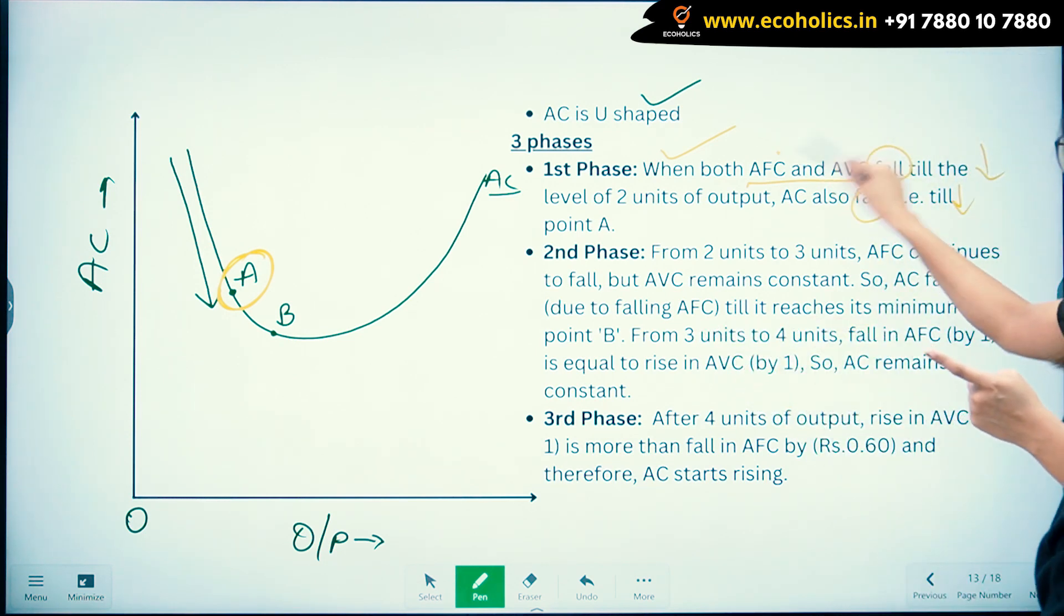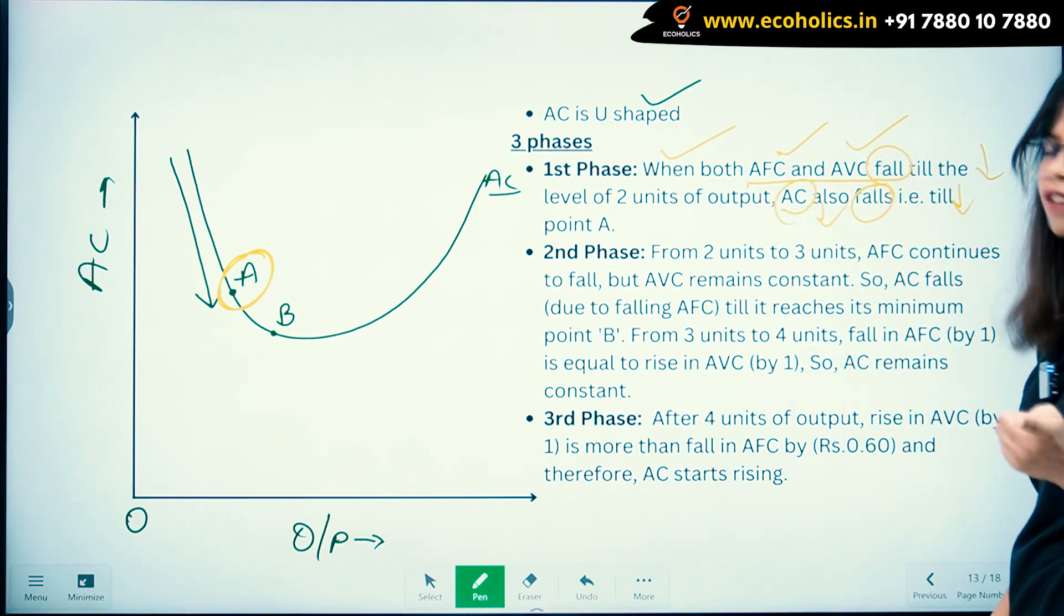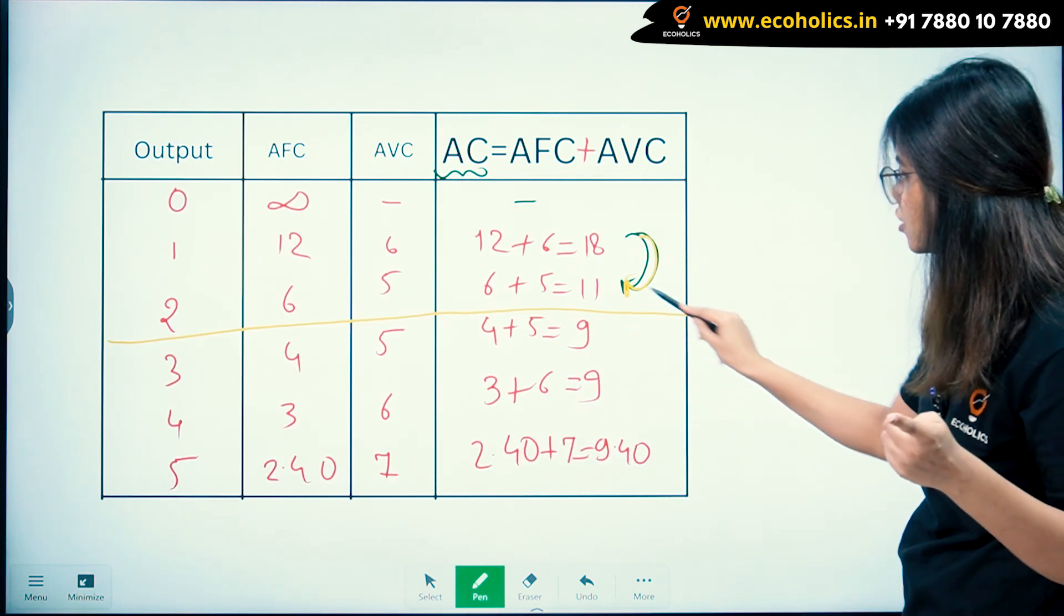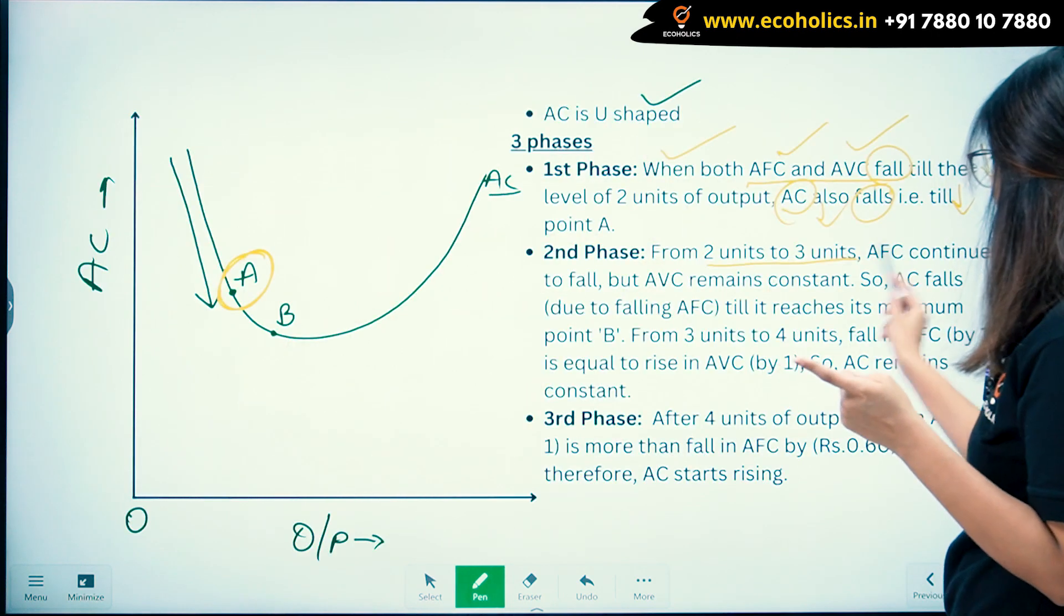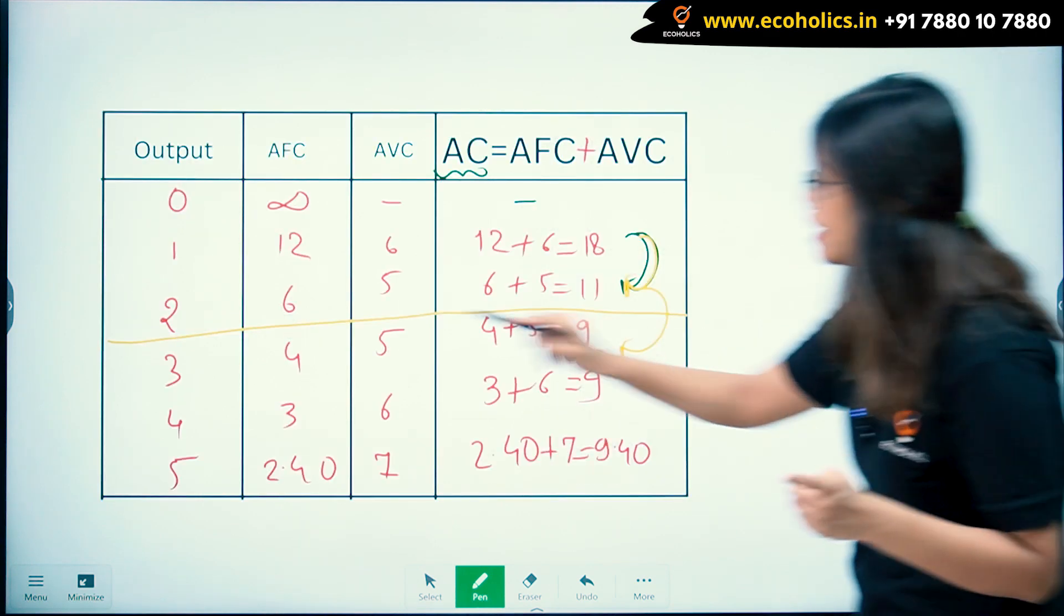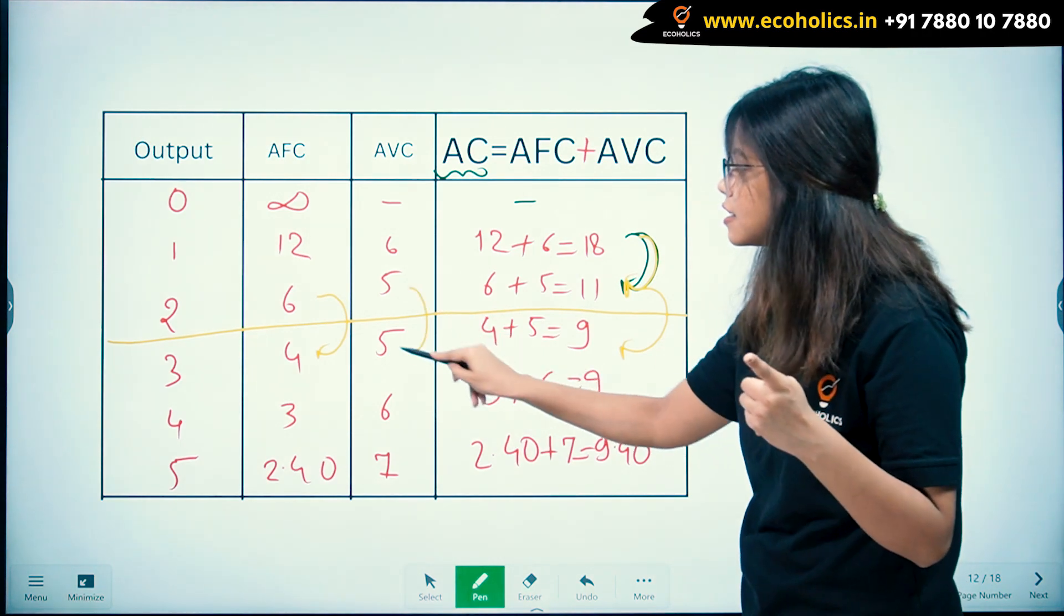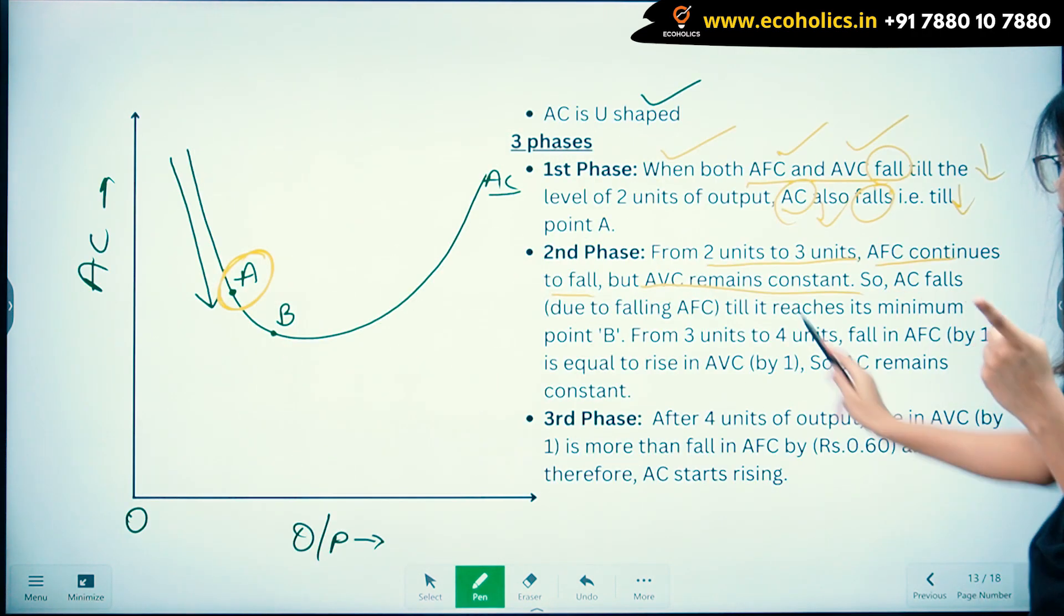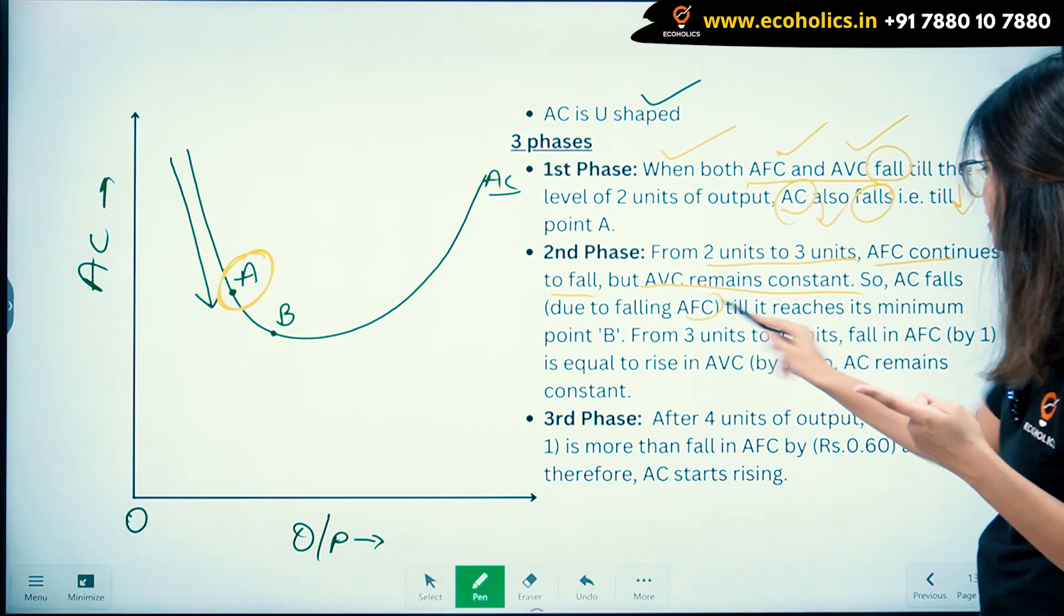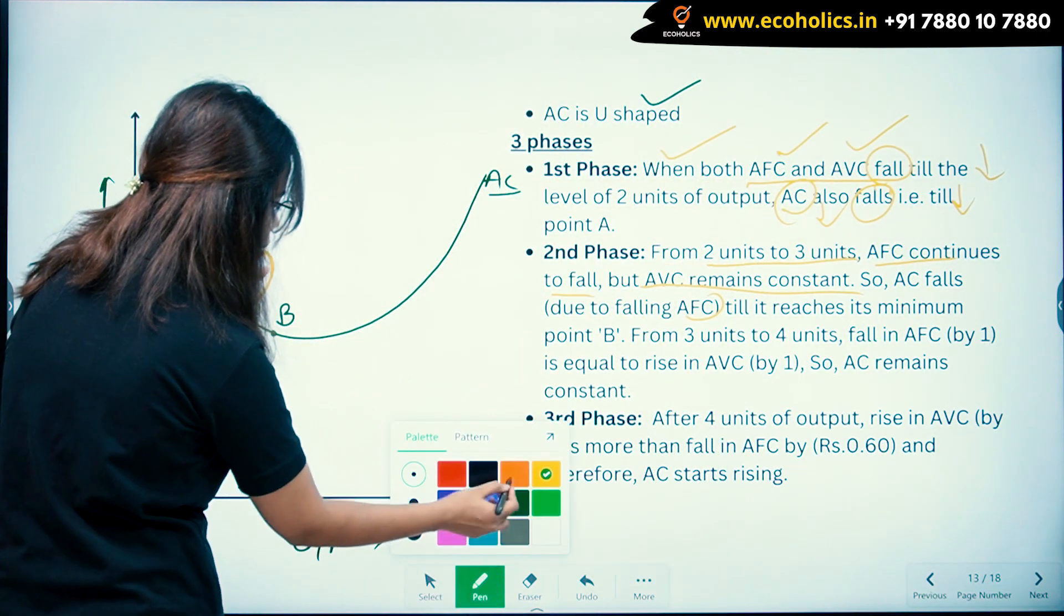Second phase is from two to three units. AFC continues to fall but AVC remains constant. AFC continues to fall from 6 to 5, but AVC is constant - 5 to 5. So AC falls due to falling AFC till it reaches its minimum, that is point B.